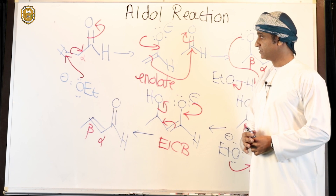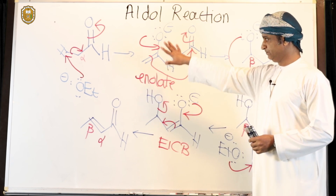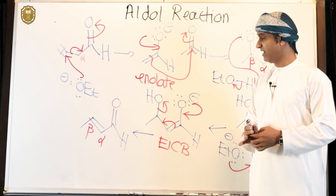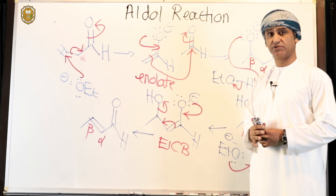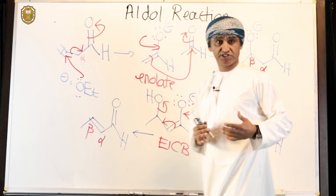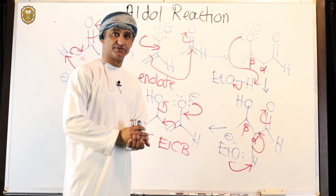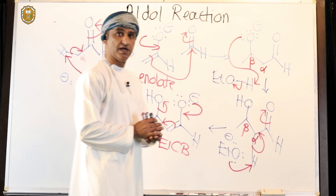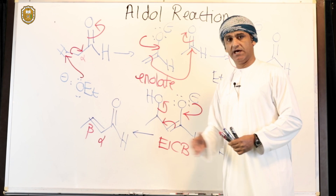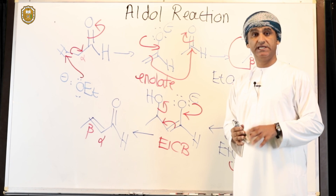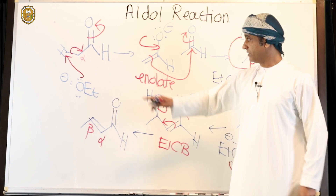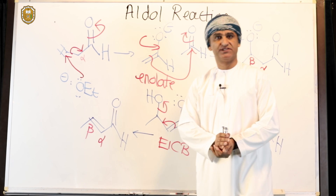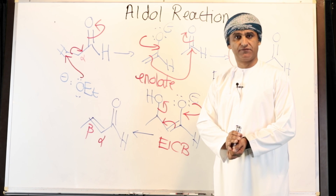So under catalytic base conditions, in aldol condensation reactions, the final product is an alpha-beta unsaturated carbonyl compound. Initially, yes, a beta-hydroxycarbonyl compound is formed, but with catalytic base, that base affects elimination of the hydroxyl group to give alpha-beta unsaturated carbonyl compounds. In summary, carbonyl compounds with an alpha-hydrogen, if treated with catalytic base, yield an alpha-beta unsaturated carbonyl compound.